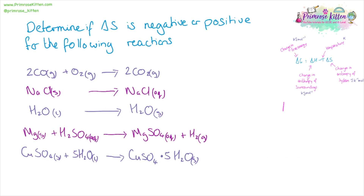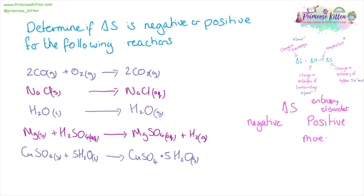Here we have a set of reactions, and looking at these reactions we need to determine if delta S is going to be positive or negative, because not all calculations actually involve numbers. We have to remember that delta S is entropy or disorder, so we're looking for situations that are going to become more or less ordered, and this can relate to the number of moles.